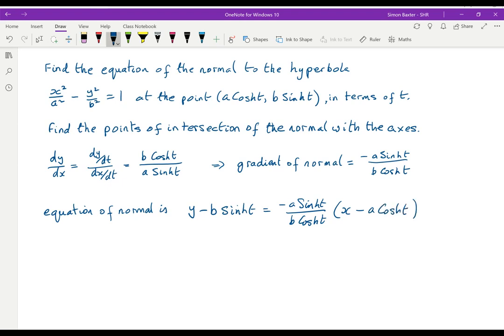Tidying that up and bringing the x's over, I get ax sinh t plus by cosh t. I then get b² sinh cosh, and on the other side I get a² sinh cosh, so this is equal to (a² + b²) times sinh t cosh t.